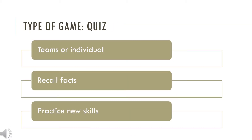Now that we've reviewed the existing game or designing your own game, we need to review the types of games there are. The first type of game is the quiz. There are many familiar models on television game shows that are a quiz-type format, such as Jeopardy! and Who Wants to Be a Millionaire? These kinds of games can be played in teams or individually, and a quiz can help with the learners recalling facts and help them practice new skills.